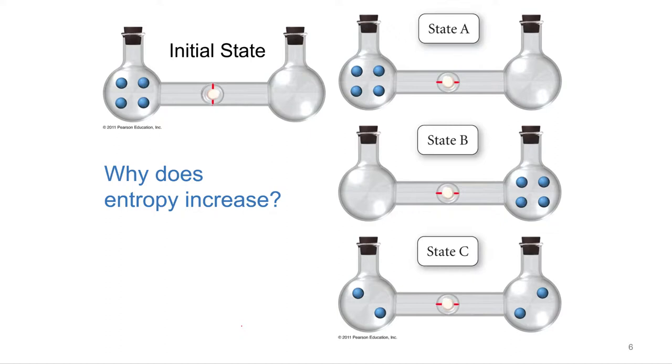Before I talk about why, let's think about which of these states, A, B, or C, is the most disordered? C. C is the most disordered. These are all on one side, all on one side, spread across. So you can see that this is more disordered. So everybody said C, and it will turn out to be C. And we also agree that it's the most disordered.